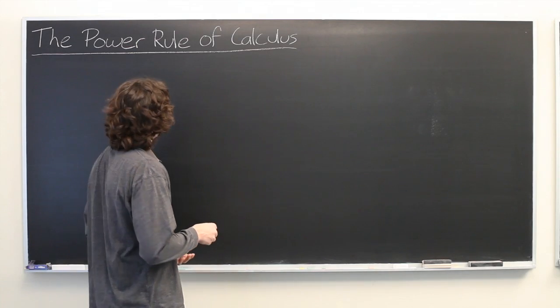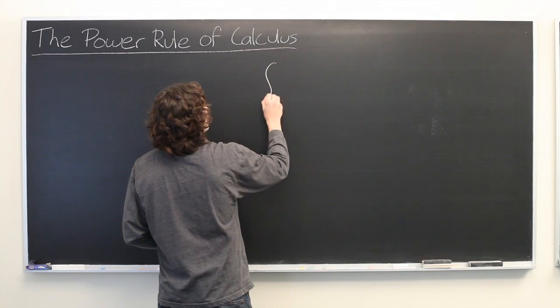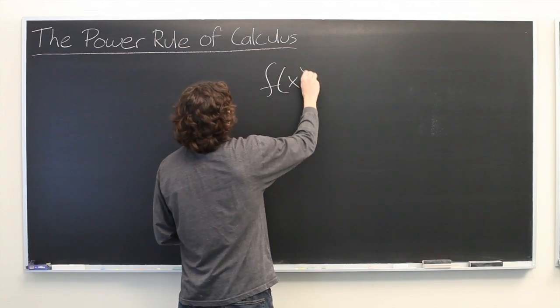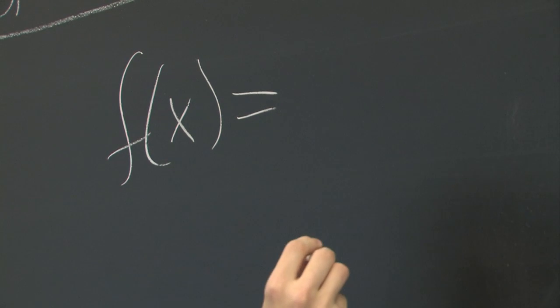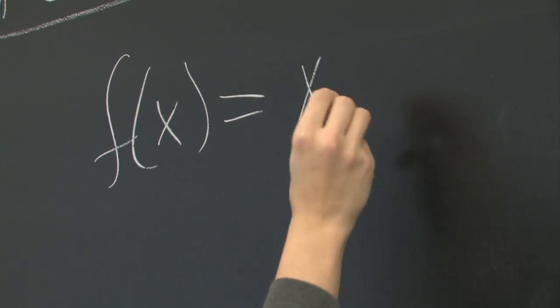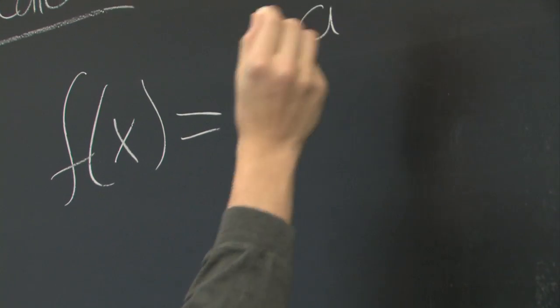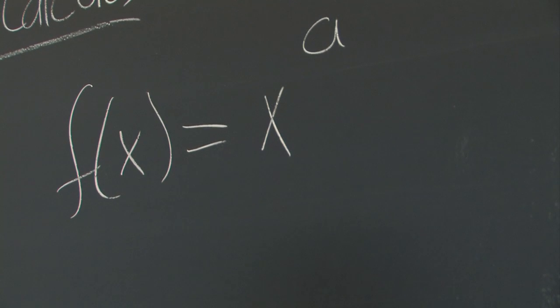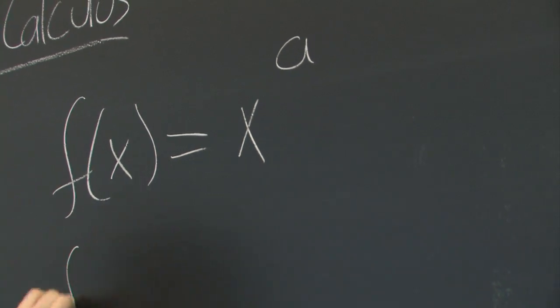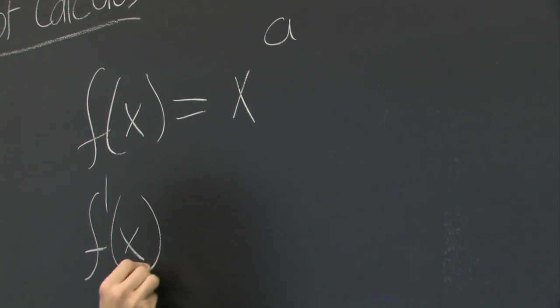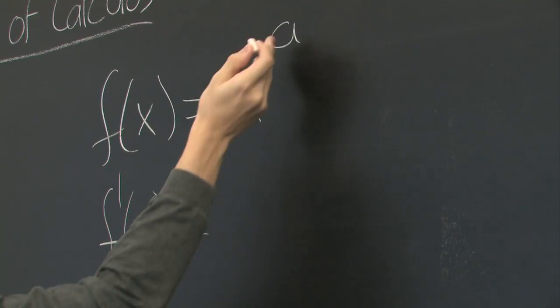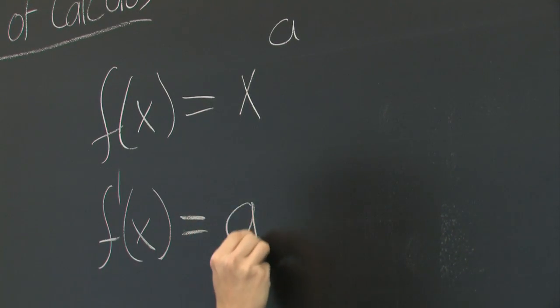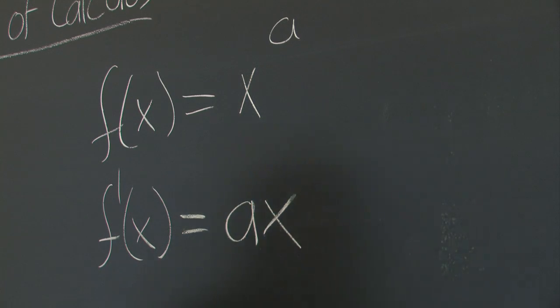The power rule states that if we have some function of x, function of any variable but it's frequently x, if we have x raised to some power a, where a can be any number, we can very easily compute the derivative using the following simple formula. We bring down the exponent so we get a times x and then we subtract 1 from the exponent.